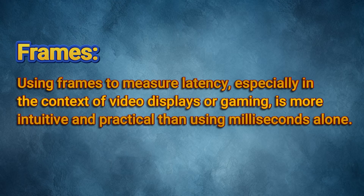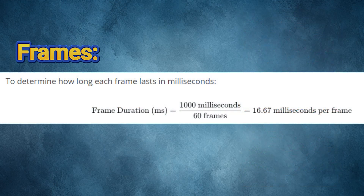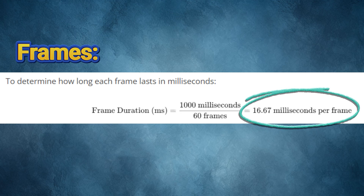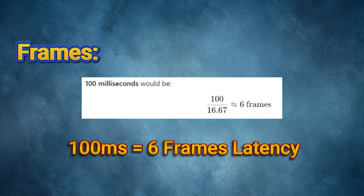While measuring in milliseconds is ideal for accuracy, converting milliseconds to frames is easier to understand and a more accurate representation of the delay from a player's perspective. For example, the Legends 4KP playfield operates at 60Hz — in one second the display refreshes 60 times. Therefore, each frame represents 1/60th of a second. Using the formula, each frame equates to 16.67 milliseconds. So if we measured 100 milliseconds of latency, the number of frames elapsed would be 6 frames — 100 divided by 16.67.